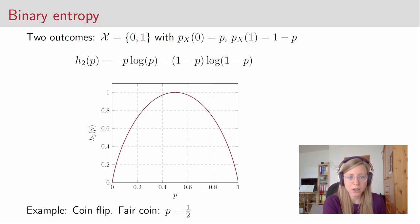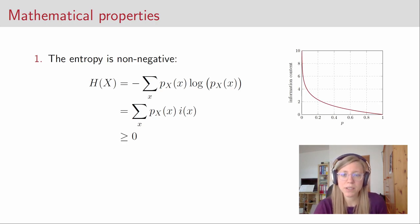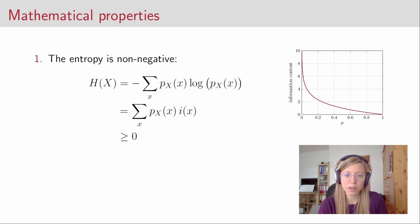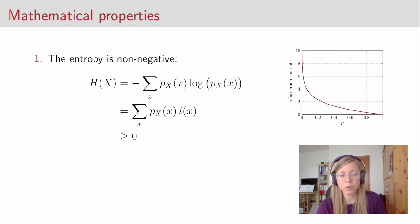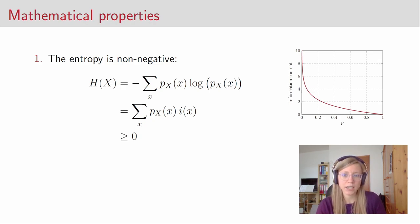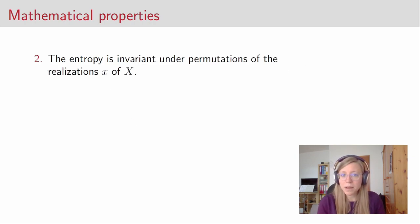So after we have seen some examples of entropies and how the entropy of a random variable is computed, we will have a closer look at some mathematical properties of the entropy function. The first property is that the entropy is non-negative. If you look at the formula for the entropy, it corresponds to a sum over the information content weighted by the probability of the realization. The information content is a positive function, so if we weigh it with positive weights, we get a positive function out of that.